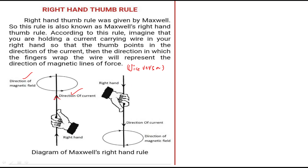This is the upward current direction which is represented by thumb. This is the direction of magnetic field which is anti-clockwise direction, which is represented by curled fingers. Like that, if the direction changes, this thumb represents the direction of magnetic field, and the direction of magnetic field is clockwise.